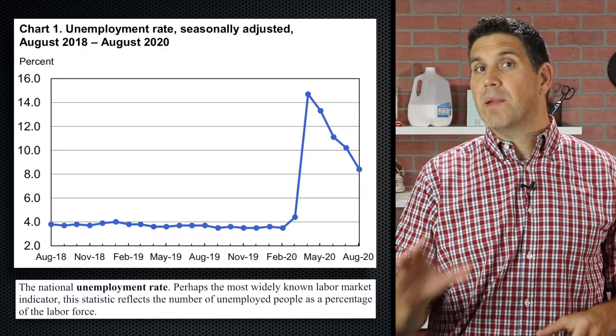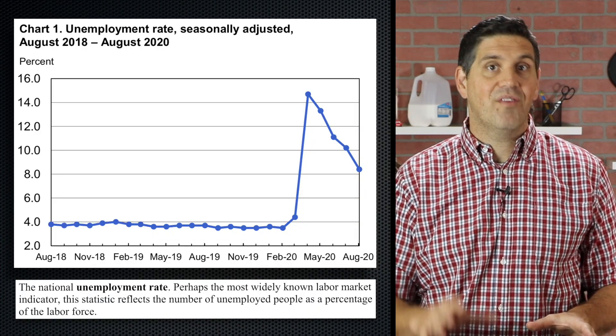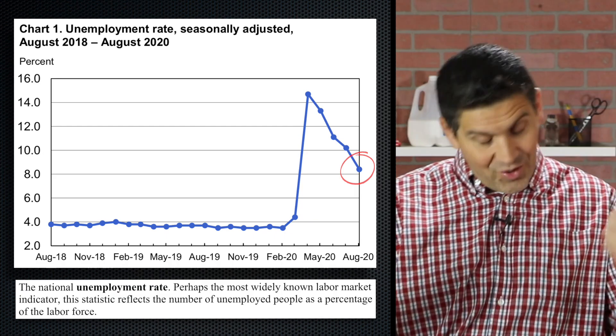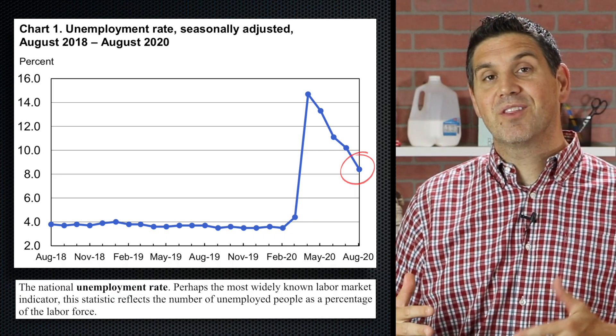The unemployment rate in August of 2020 fell to 8.4%. In other words, things are getting better, but they're not good.